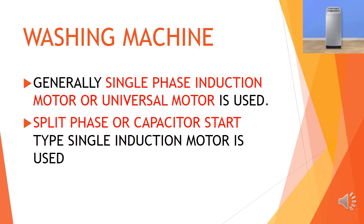Washing machine: Different brands use different types of motors in washing machines. Generally, single-phase induction motor or universal motor is used. Split-phase or capacitor-start type single-phase induction motor is used in washing machines.